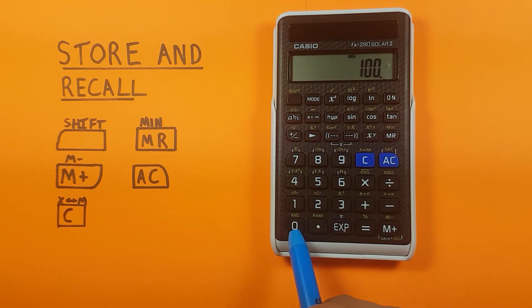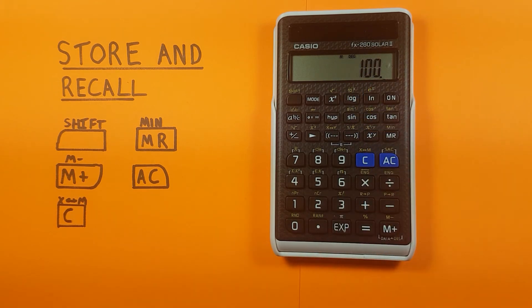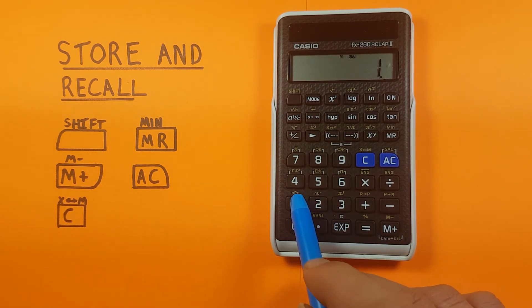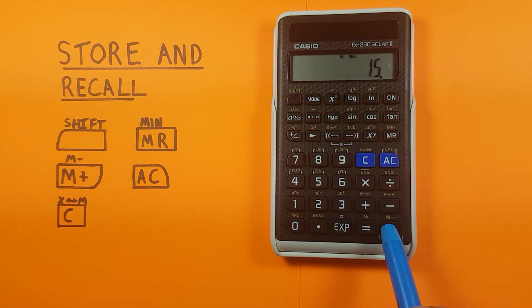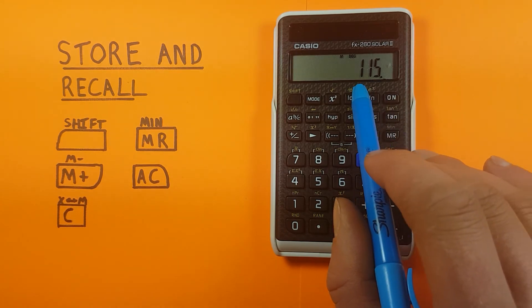Put the hundred back in our memory. Shift MR, there's our M. Now we can add and subtract to this number with the M+ and M- key down here. So if we wanted to add, let's say, 15 to that, place it on the screen and then press the M+. Then if we bring up our MR, we can see this is now 115.